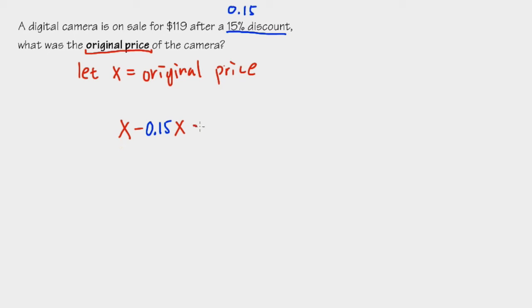And all in all at the end, we get 119 and that's the price that we have to pay. So this is the set of the equation and we just have to solve it now.